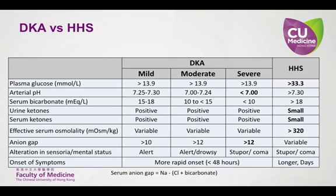You have probably seen a table similar to this showing the differences between DKA and HHS. HHS has a much slower onset, higher glucose levels, a higher pH and bicarbonate values. Urine ketones will either be negative or maybe 1+, and the serum osmolality will be very high. Notably, 33% of patients present with a mixed picture of DKA and HHS, particularly if the precipitating disease state is altering lab values or symptoms to make it look more like DKA.